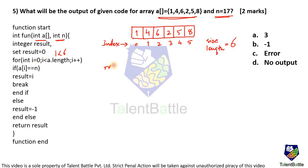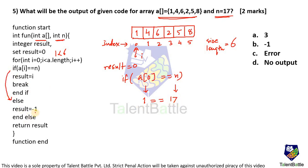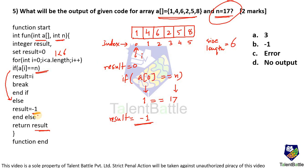Stepping through: result is initialized to 0, loop starts at i = 0. a[0] = 1, and n = 17 — this is false, so result becomes -1. Analyzing the remaining elements, none of the array elements equal 17, so every iteration will take the else branch and assign -1 to result. The final answer is -1, which is option B.